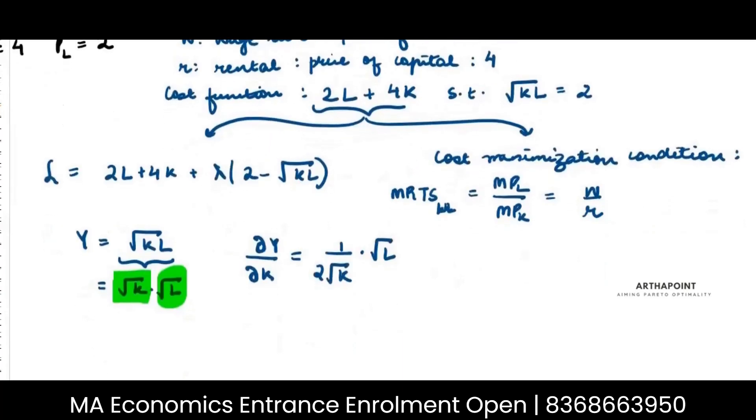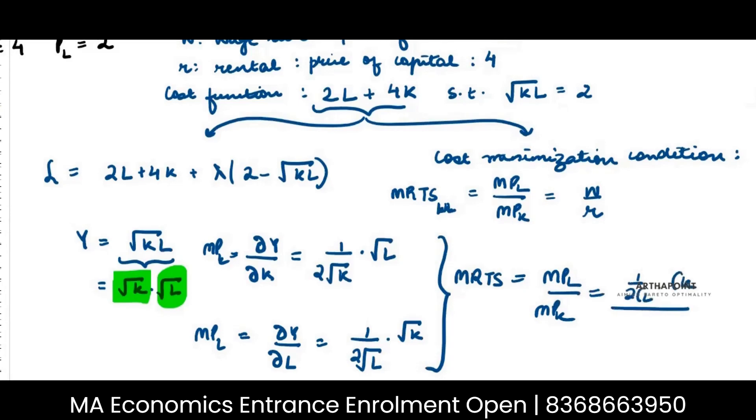Similarly when you go ahead and you find MPL, this will be how output changes when labor changes. So you will differentiate this with respect to labor. So you will get 1 by 2 root L into root K. Now from here I can find MRTS, so MRTS will be MPL by MPK, this will be 1 by 2 root L into root K upon 1 by 2 root K into root L.